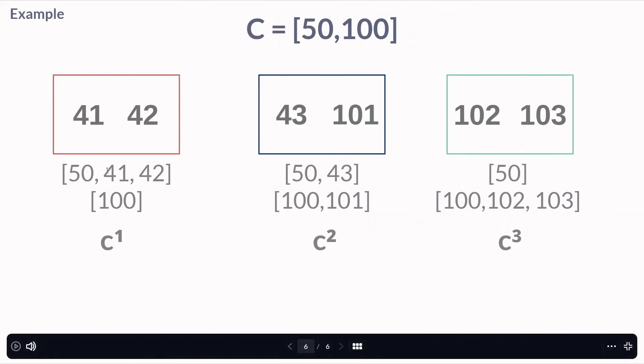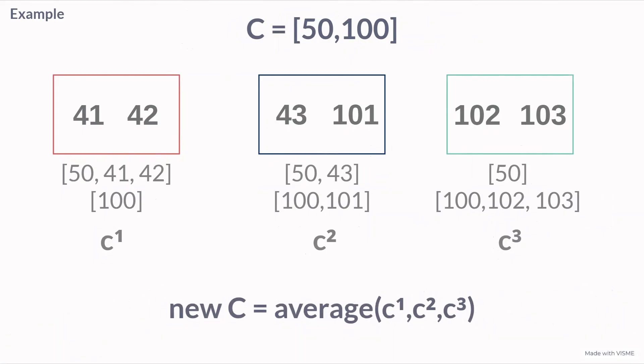After we compute the average of each one of these, that is, we have our local centroids, we're going to get them somehow. We're going to retrieve their values, take an average, and from the average we're going to repeat the process again and again. Let's see the code.